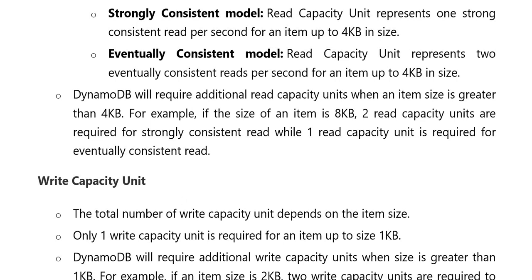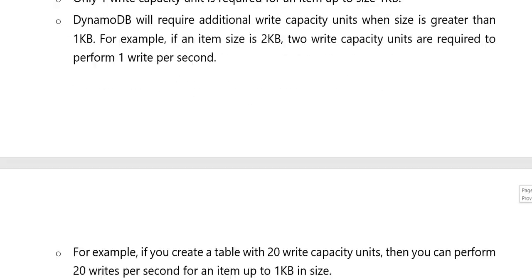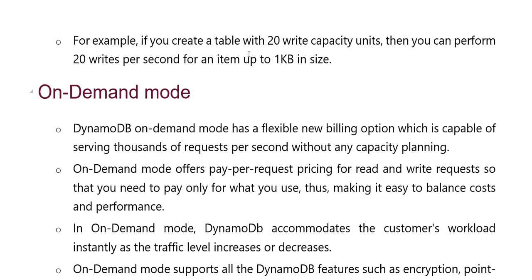Write capacity unit — total number of write capacity units depend kari hain item size per second. One write capacity unit required hain for an item up to 1KB in size. DynamoDB additional write capacity units require kari hain jab size greater than 1KB ho. For example, agar item size 2KB hain to two write capacity units required hain to perform one write per second. Aur agar create kari hain table with 20 write capacity units, then you can perform 20 writes per second for an item up to 1KB in size.